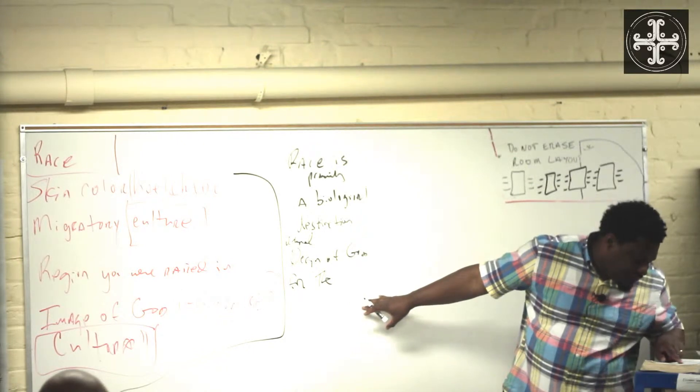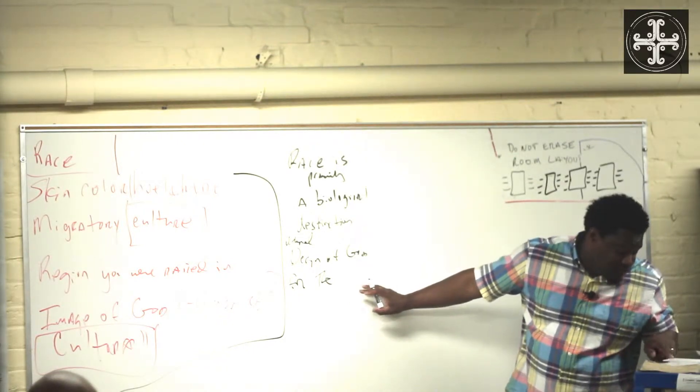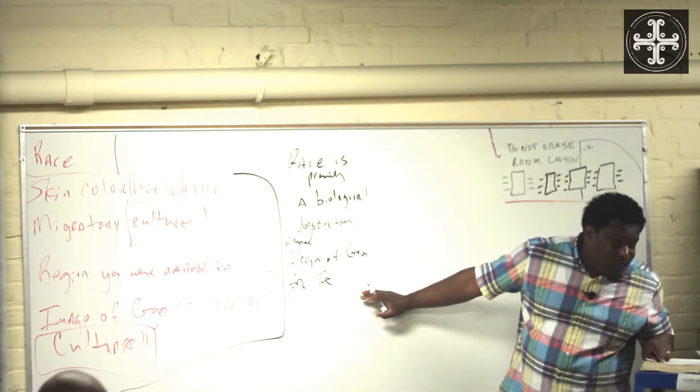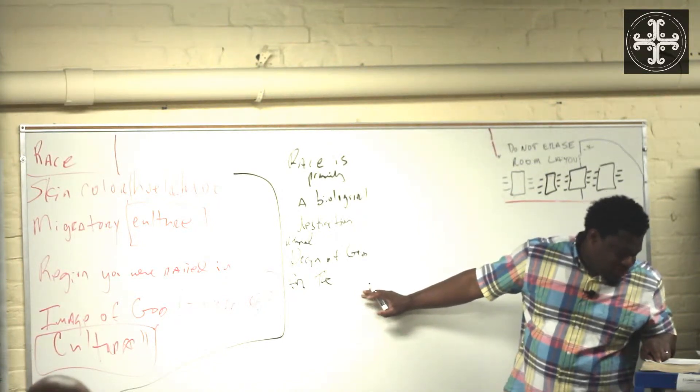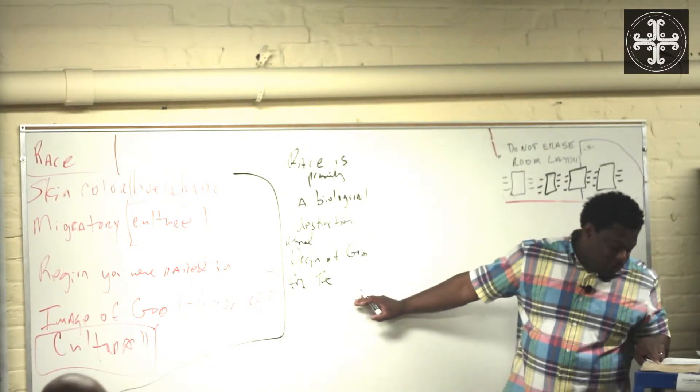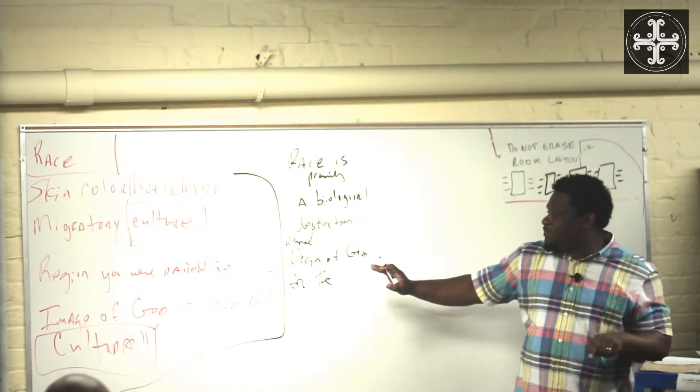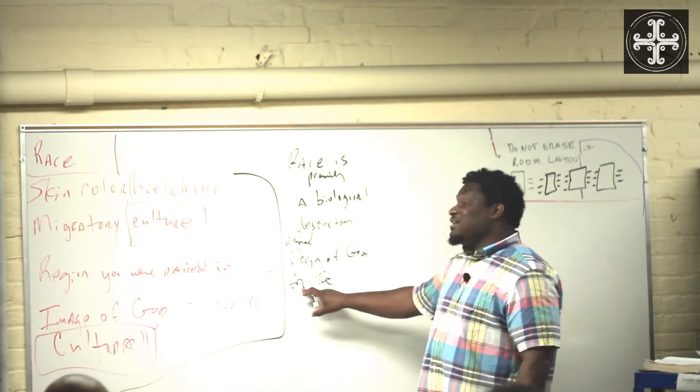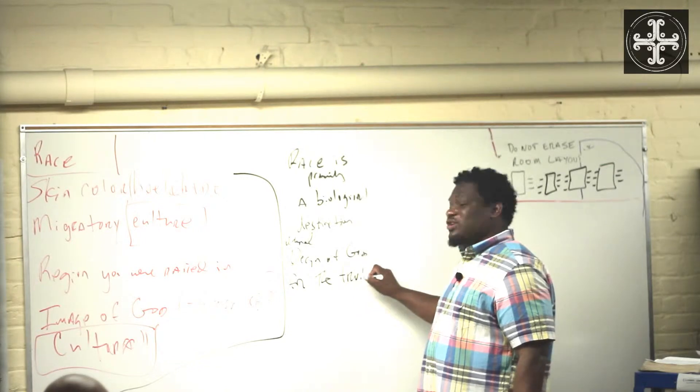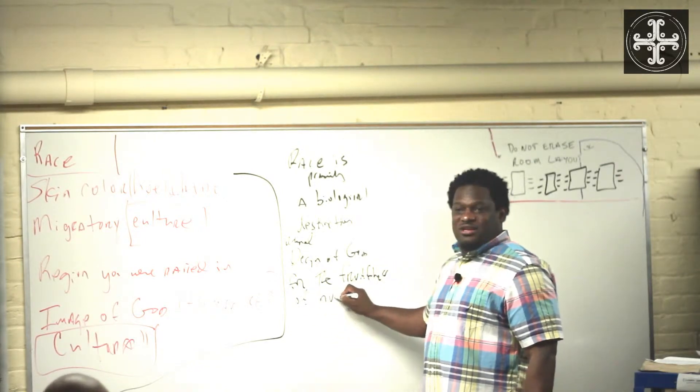If you look at it, it says in verse 26, let the earth bring forth living creatures according to their kinds. Now look at verse 28, and God blessed them, and God said to them, be fruitful and multiply and fill the earth and subdue it. It's the design of God for the fruitfulness of humankind.